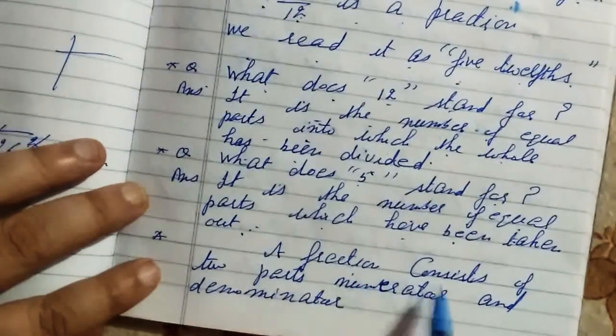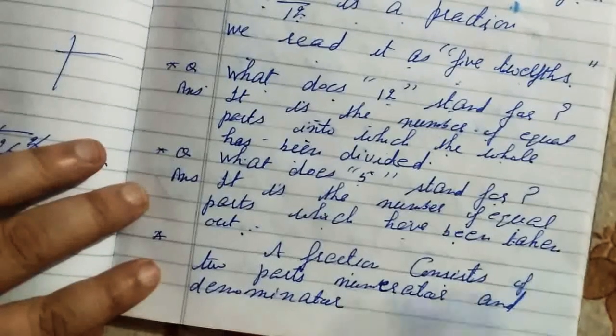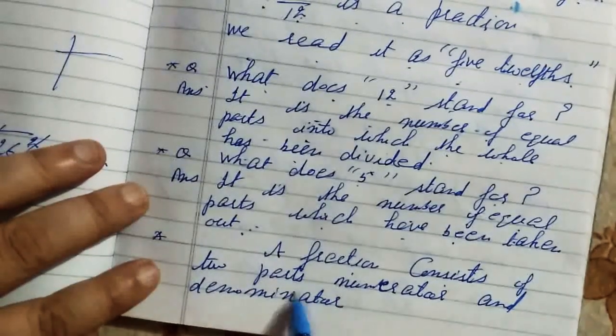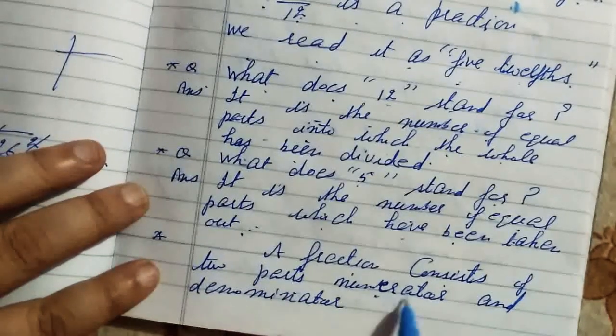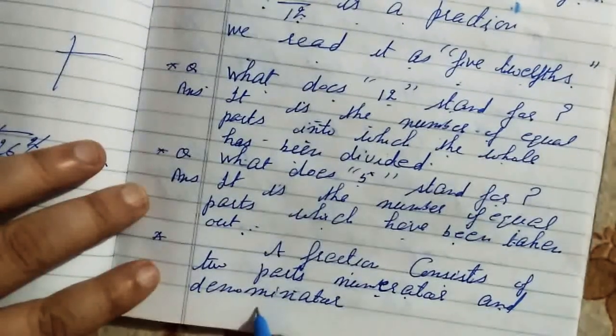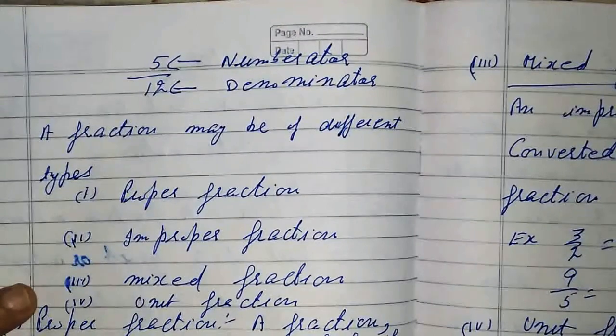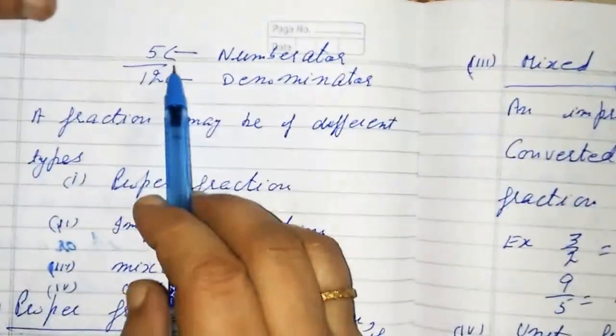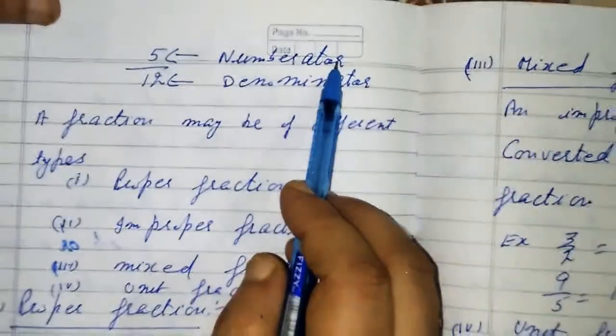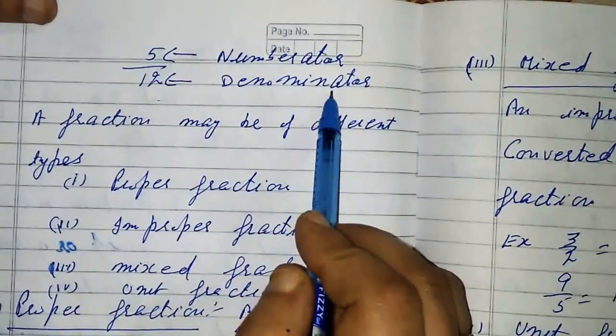Next, a fraction consists of two parts: numerator and denominator. Next, five is the numerator, twelve is the denominator.